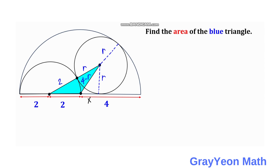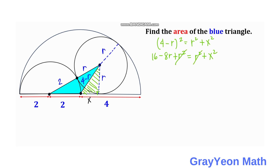Focusing on this right triangle, we write a Pythagorean theorem equation. We have (4 minus r) squared equals r squared plus x squared. Expanding: 16 minus 8r plus r squared equals r squared plus x squared. We cancel the r squared terms, and we have x squared equals 16 minus 8r.